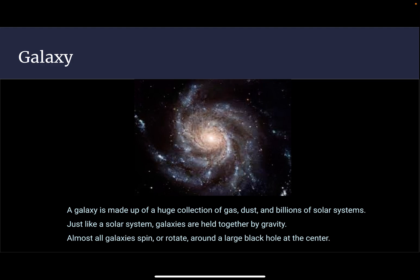The galaxy is made up of a huge collection of gas, dust, and billions of solar systems. Just like a solar system, galaxies are held together by gravity. Almost all galaxies spin or rotate around a large black hole at the center.